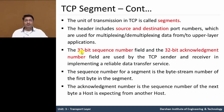We have used this sequence number field and acknowledgement number field in the RDT protocol for reliable data transfer services. The sequence number for a segment is the byte stream number of the first byte of the segment.